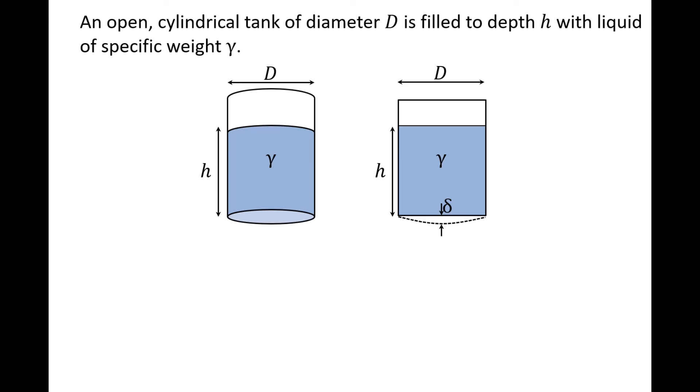You consult with an engineer who has a lot of experience with the behavior of materials, and the engineer thinks that delta should be some function of the tank diameter D, height of the liquid h, specific weight of the liquid gamma, as well as the modulus of elasticity of the tank material E, and the thickness of the bottom of the tank, tau.